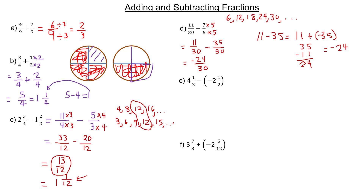They actually both divide evenly by three as well — three goes into both 30 and 24. Because they divide by two and three, two times three is six, so you can divide both by six to reduce it the most right away. Negative 24 divided by six is negative four, and 30 divided by six is five. So our final reduced answer in simplest form would be negative four-fifths.